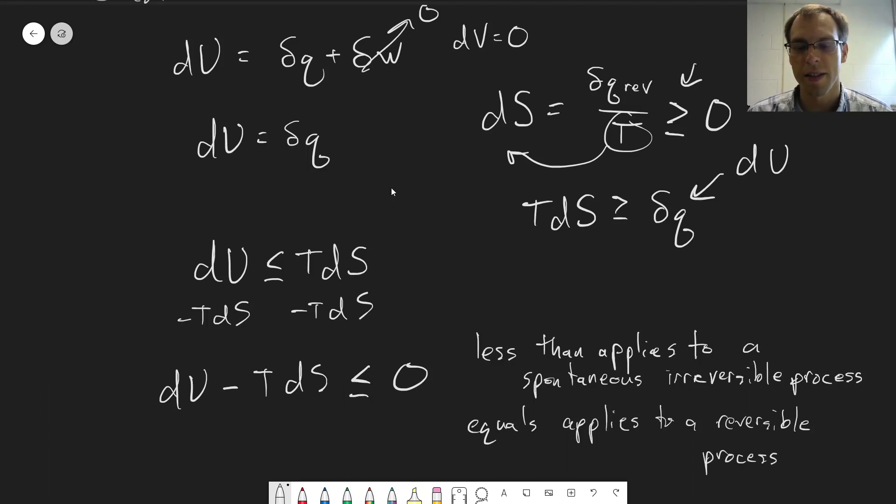So what this tells us is that if we can find the change in internal energy minus the temperature times dS for our system, everything here now just involves the system, that tells us the spontaneity of that process happening in the system, because we're sort of taking the surroundings into account as well.